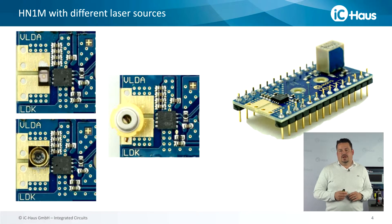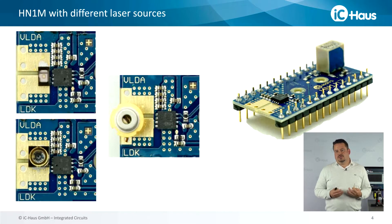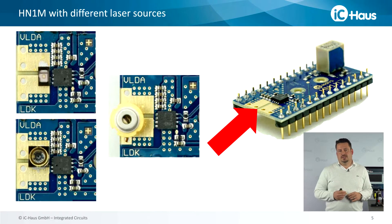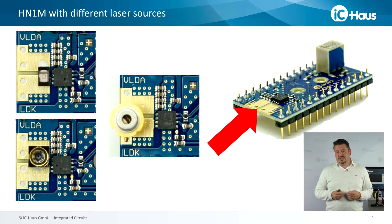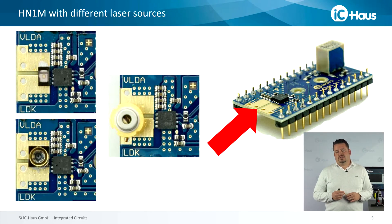In these HN1M evaluation board examples, we have installed different laser diode types with different package versions. In your application, your diode would go here, so that you can directly attach an SND TO5, TO18, TO52, 5.6 mm or 9 mm diode to the HN1M module. This HN1M module is the easiest and fastest way if you want to operate your laser diode with ICHN on the bench for research or testing.